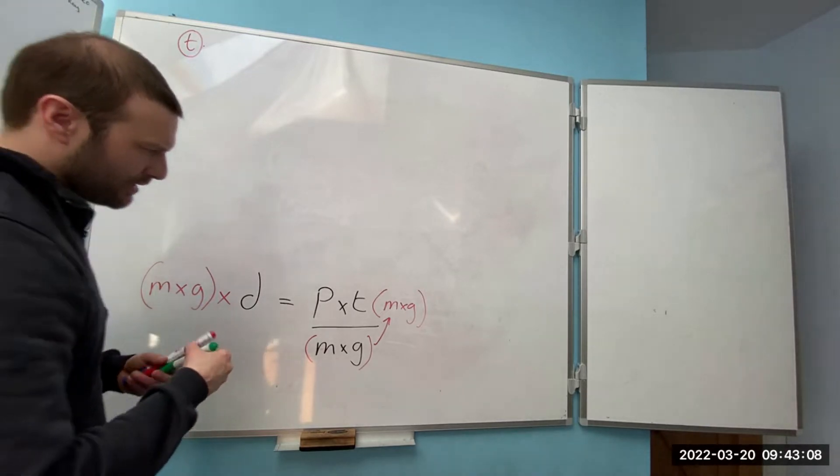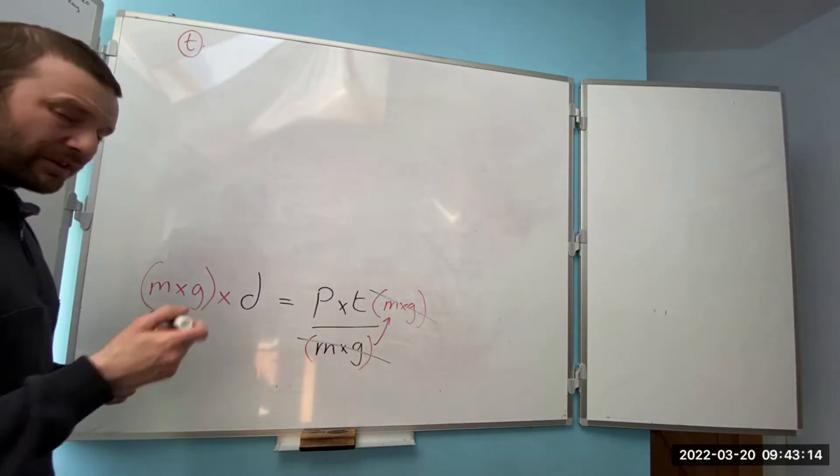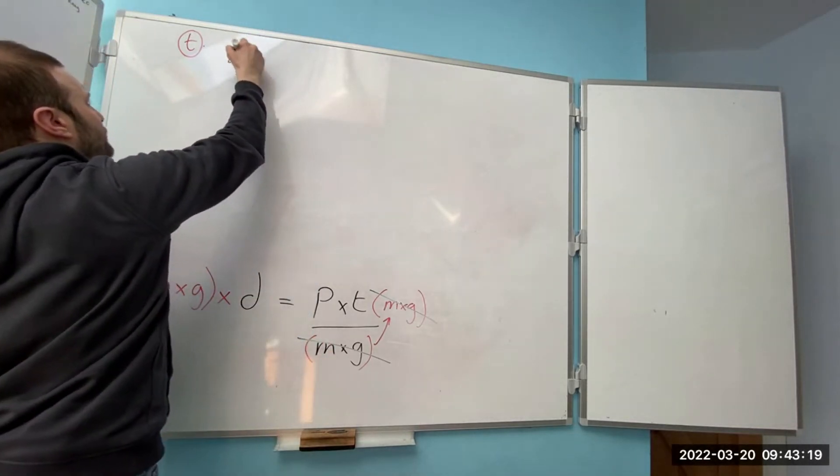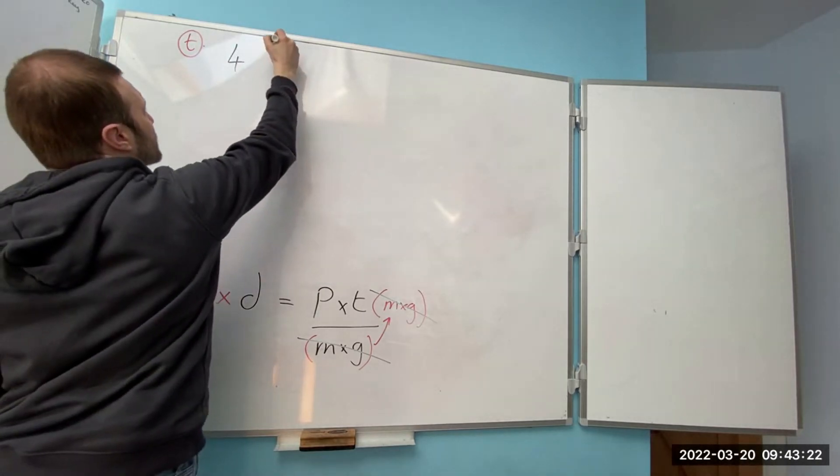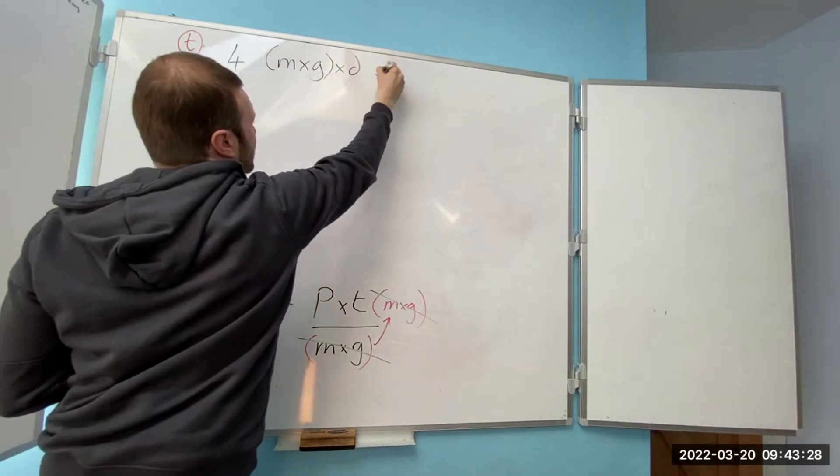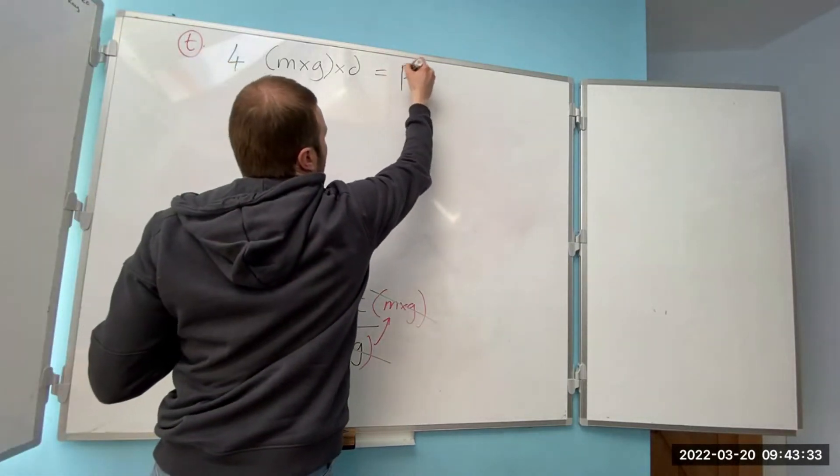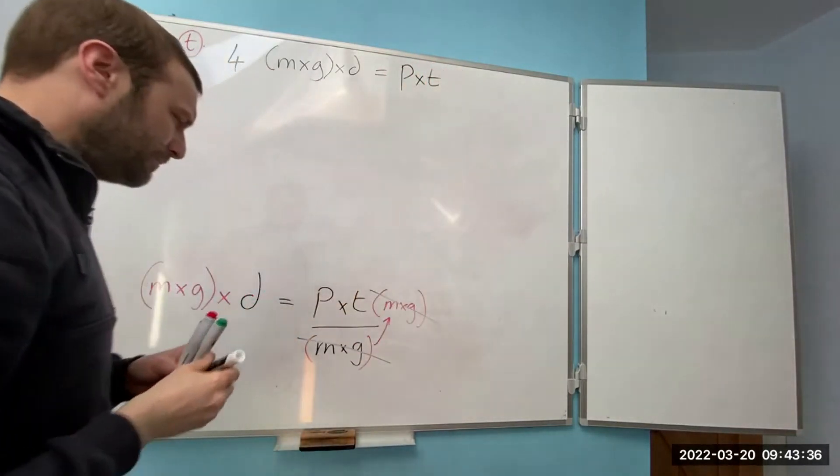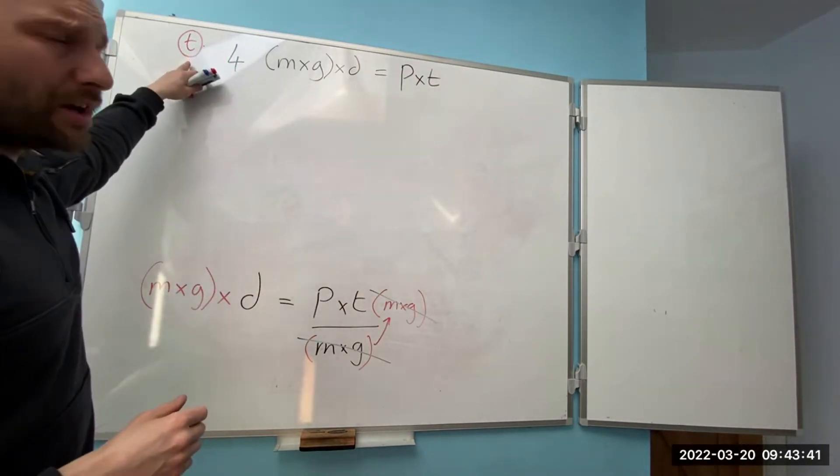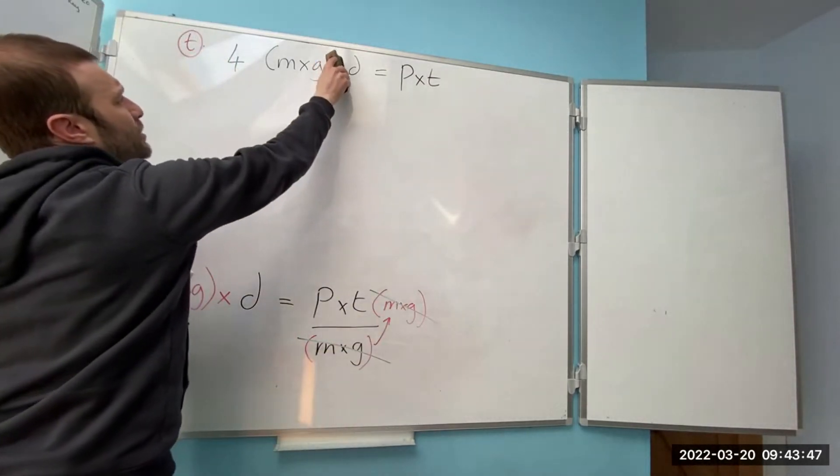At this point that and that cancel each other out. So I'm going to rewrite the formula neatly up here. This will be step four. We've got in brackets mass times gravity times distance equals power times time. We're looking for T for time. I don't have T by itself.